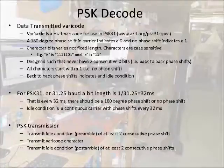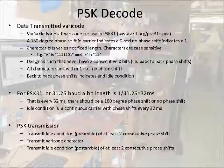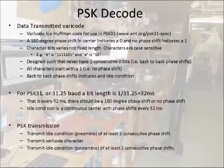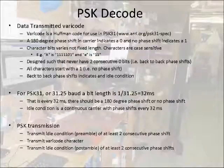When at least two consecutive 180-degree phase shifts are transmitted, this lets the receiver know it's the end of transmission. When no data is being transmitted and the channel is idle, consecutive phase shifts are sent every 32 milliseconds. For a PSK transmission, you would start off by transmitting the idle condition, followed by the varicode, then send at least two zero bits to mark the end of transmission.